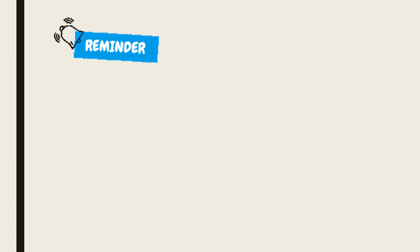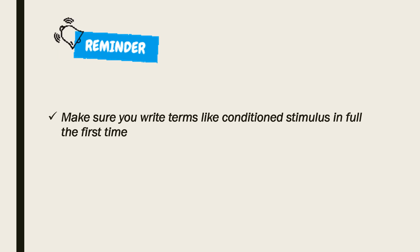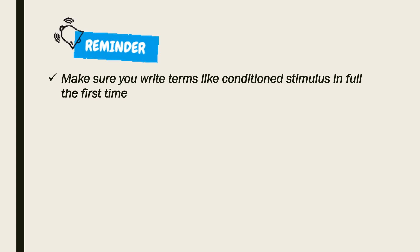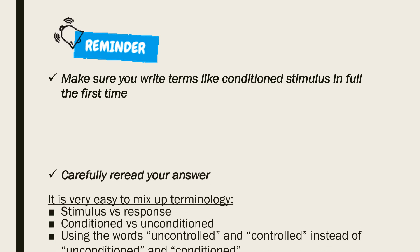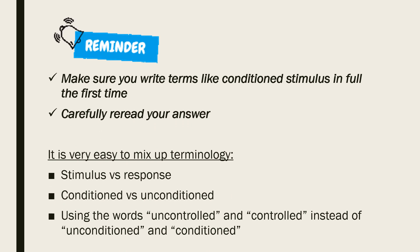A couple of final reminders before we finish. Firstly, make sure you write terms like unconditioned and conditioned stimulus in full the first time. After that, it's fine to abbreviate to UCS and CS. It's important to demonstrate to the marker that you know what those terms stand for, as students frequently get their terms for classical conditioning muddled up, so markers can't give you the benefit of the doubt if you only abbreviate. Secondly, carefully reread your answer. It is really easy to mix up terminology, including stimulus and response, conditioned and unconditioned, or even using the word 'controlled' instead of 'conditioned'.